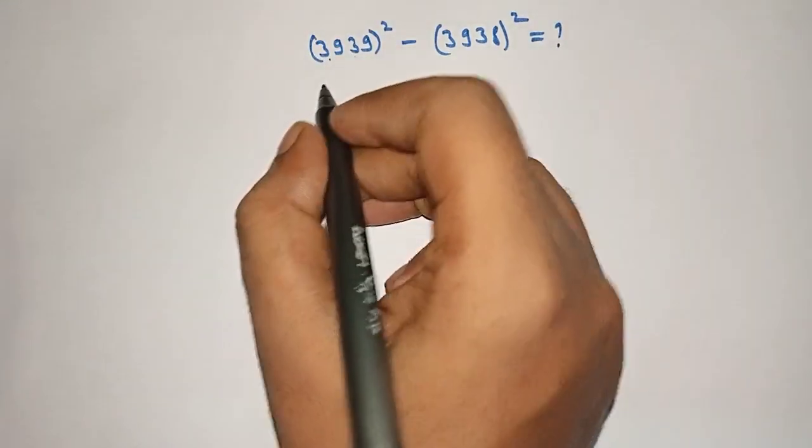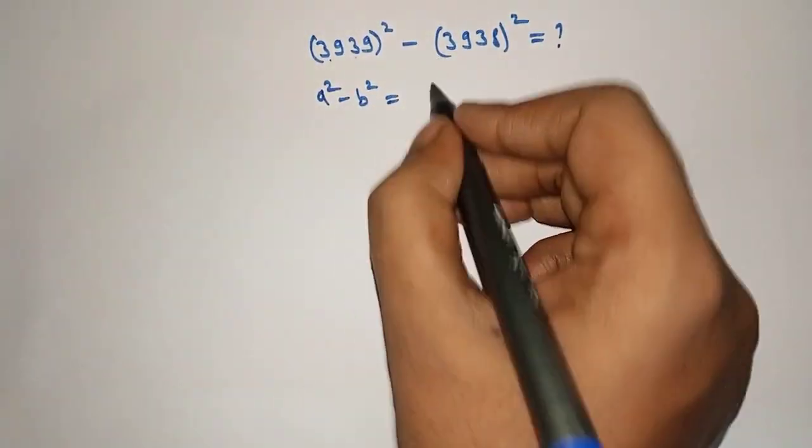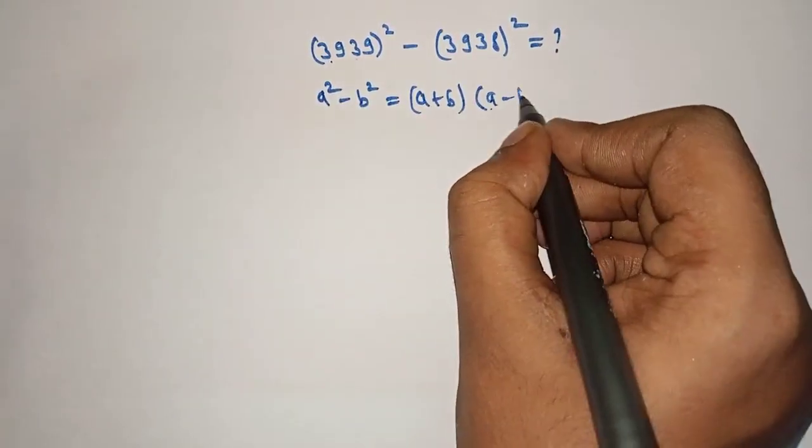So let's solve. Here we will use the formula: a square minus b square is equal to a plus b into a minus b.